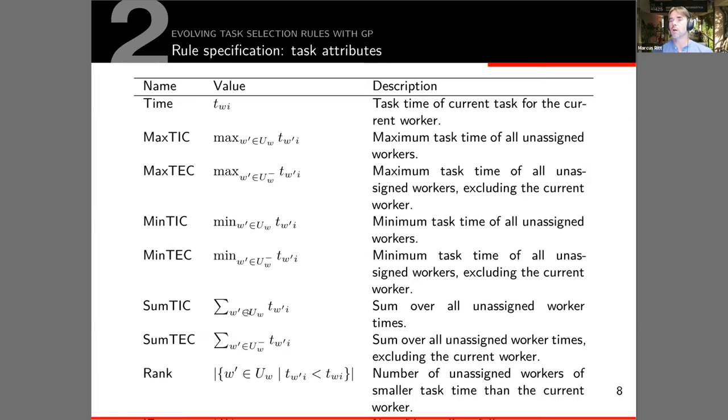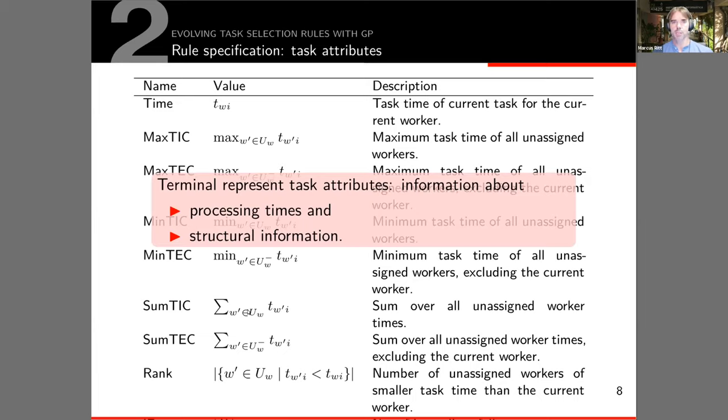The whole list is over here, but basically we have processing information about processing times of the task and structural information about the task, such as its rank among the other workers, for example.